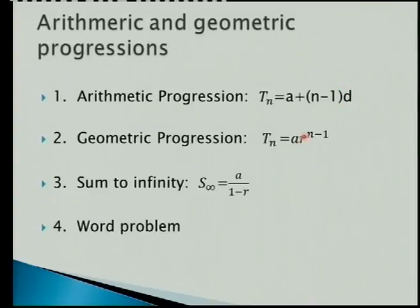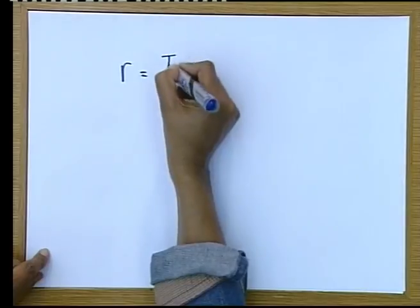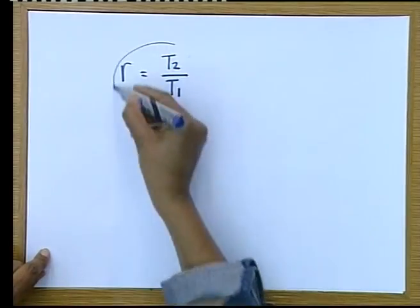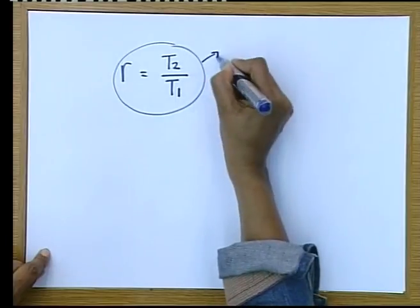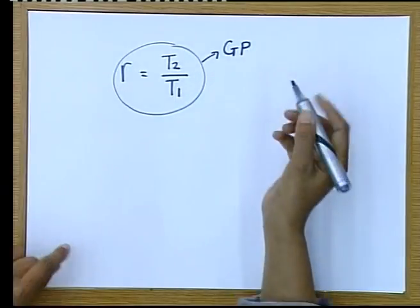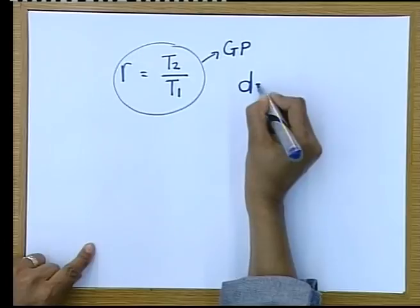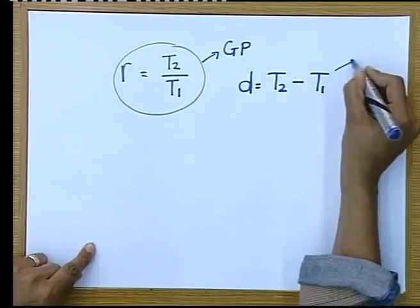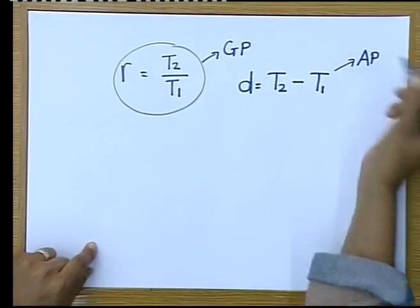And if your R is the same. Now, what is R? Remember, R is term 2 divided by term 1. That is R, and that works for a GP. And how do you get D? D is term 2 minus term 1. Then you know you're working with an AP.